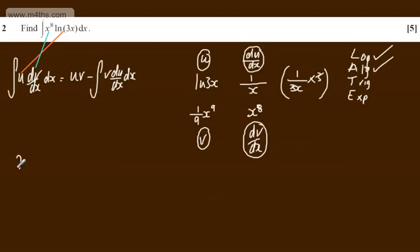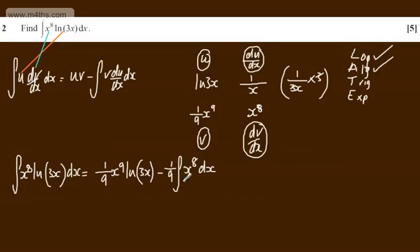So I can now state that the integral of x to the 8th multiplied by the natural log of 3x with respect to x will be equal to the product uv, which is going to be now 1/9th x to the 9th multiplied by the natural log of 3x. Then we're going to subtract away the integral of v du/dx. And I'm going to write this now as 1/9th, that's the constant. If I have x to the 9th over x, that's going to give me x to the 8th, and we're integrating with respect to x.